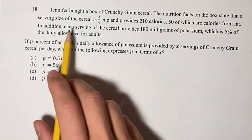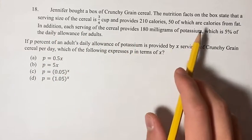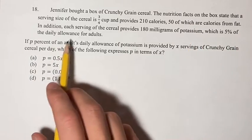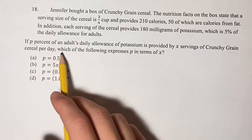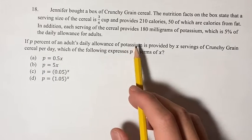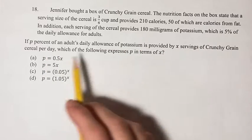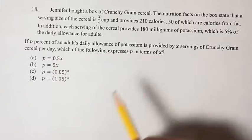In addition, each serving of cereal provides 180 milligrams of potassium which is 5% of the daily allowance for adults. We're asked if p% of an adult's daily allowance of potassium is provided by x servings of crunchy grain cereal, which of the following expresses p in terms of x.